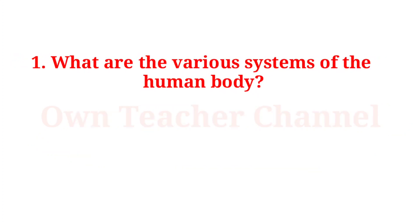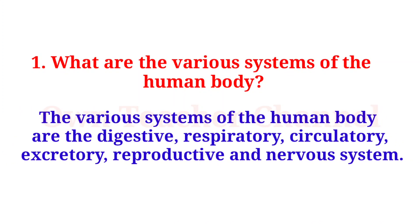Question: What are the various systems of the human body? The various systems of the human body are the digestive, respiratory, circulatory, excretory, reproductive, and nervous system.